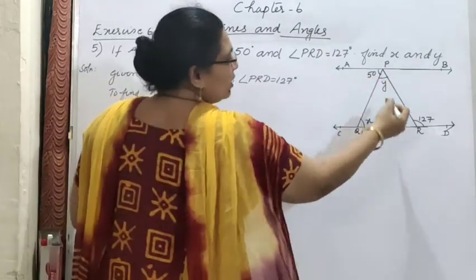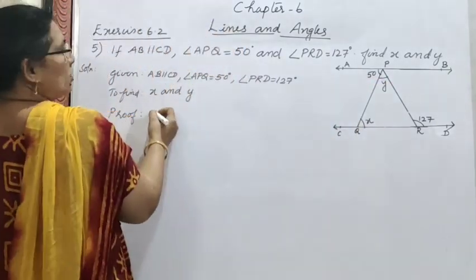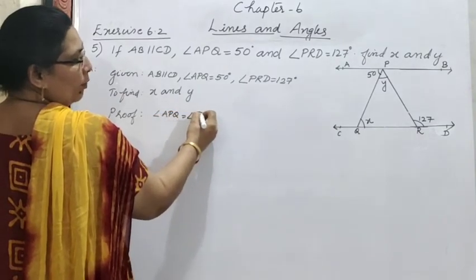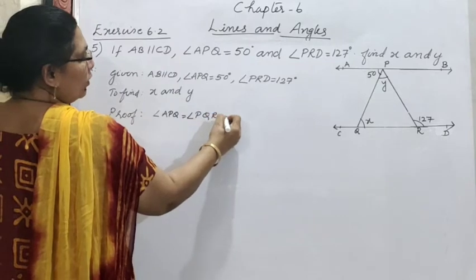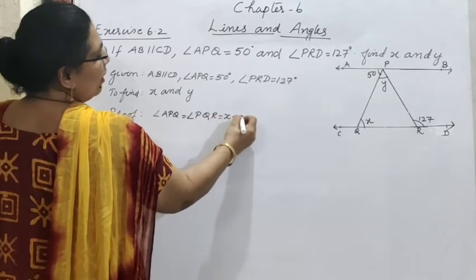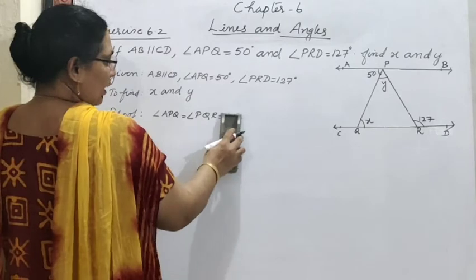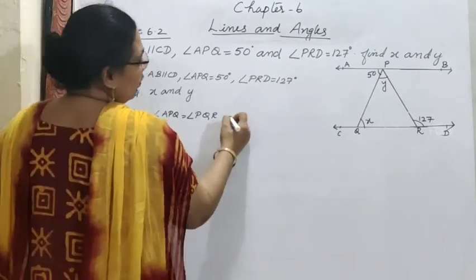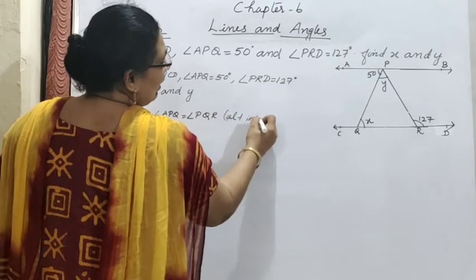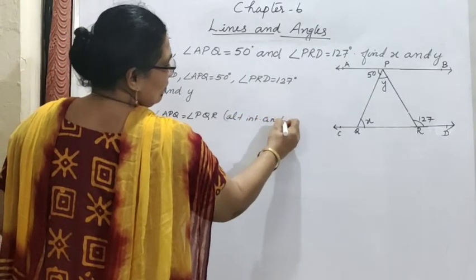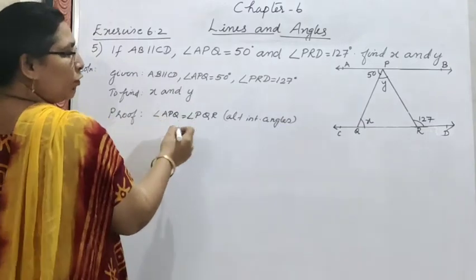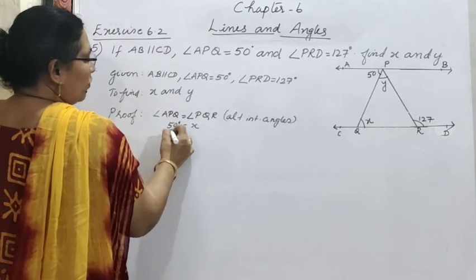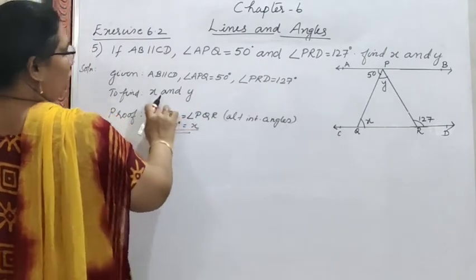Angle APQ is 50°, and angle PQR is x. So angle APQ equal to angle PQR — the reason is alternate interior angles. The value of APQ is 50°, and PQR is x, so we get x equal to 50°.